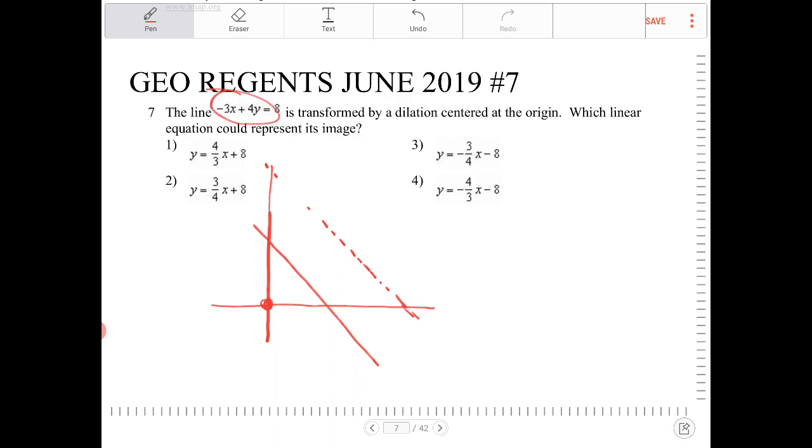This line right now, we have negative 3x plus 4y is equal to 8. I'm going to isolate y. So, I get 4y is equal to 3x plus 8.